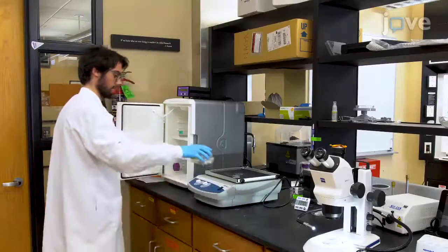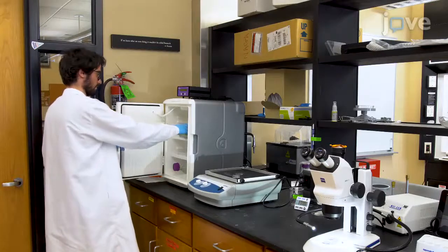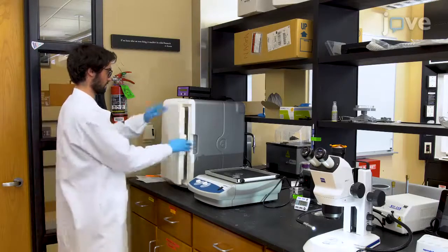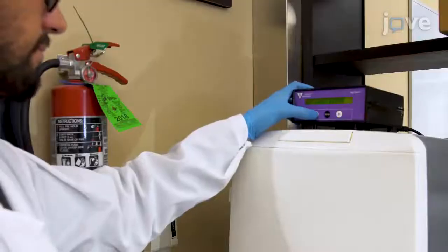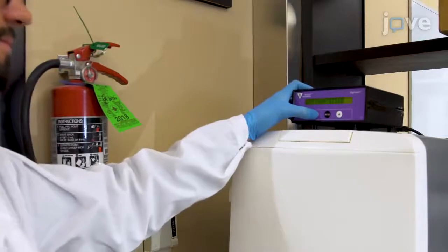On the day before spawning induction, place the anemone Nematostella vectensis in a temperature and light-controlled incubator, programming the incubator so that the animals are exposed to eight hours of light at 25 degrees Celsius.